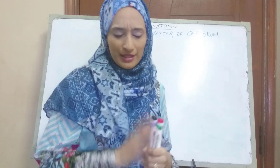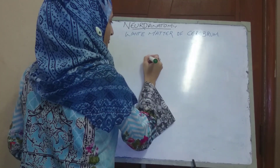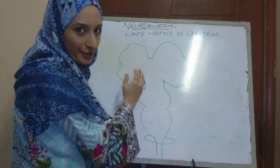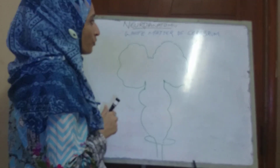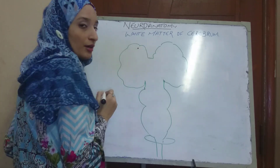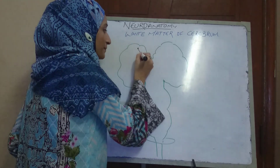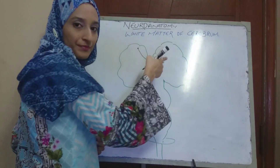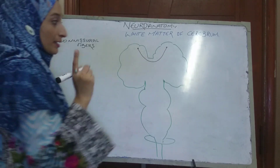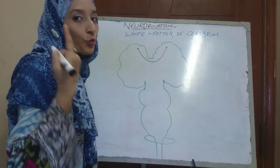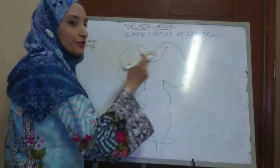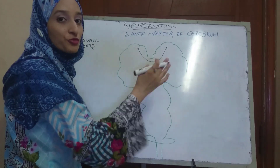We have different types of white fibers. For example, we have two cerebral hemispheres. Those nerve fibers which connect one area present in one cerebral hemisphere with the corresponding same area of the other hemisphere are known as commissural fibers. We have a number of such fibers connecting the two different halves — the corresponding regions present in the two different halves.